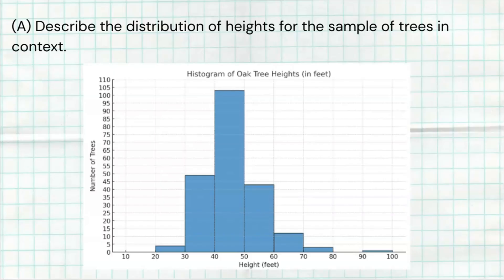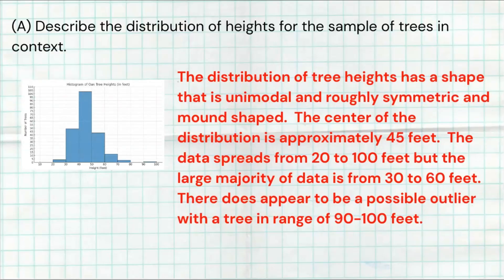You want to make sure that you mention the center, the spread, the shape, and the outliers. You want to do all of that in context. Here's my model answer for this particular question. The distribution of tree heights has a shape that is unimodal and roughly symmetric and mound shaped. The center of the distribution is approximately around 45 feet. The data spreads from about 20 feet to 100 feet, but we do see that the majority of the data is in those middle three bins from 30 to 60 feet. And I also do see a potential outlier way out there in that range of 90 to 100.